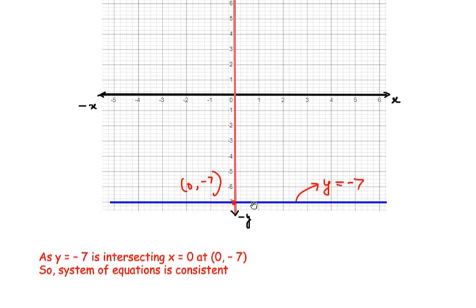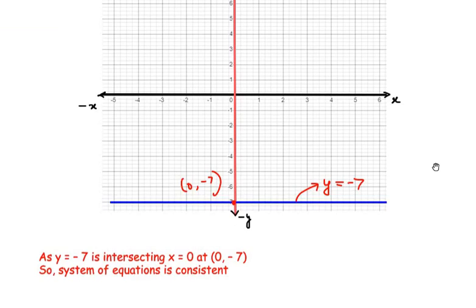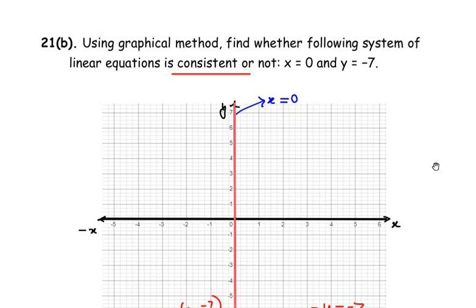If the lines intersect or meet each other, we call them consistent lines or consistent equations. So we write: y=-7 is intersecting x=0 at (0, -7), so the system of equations is consistent. I hope you understood all the steps and liked the video. If you are liking my videos, like, share, and subscribe to my channel. Thank you for watching.